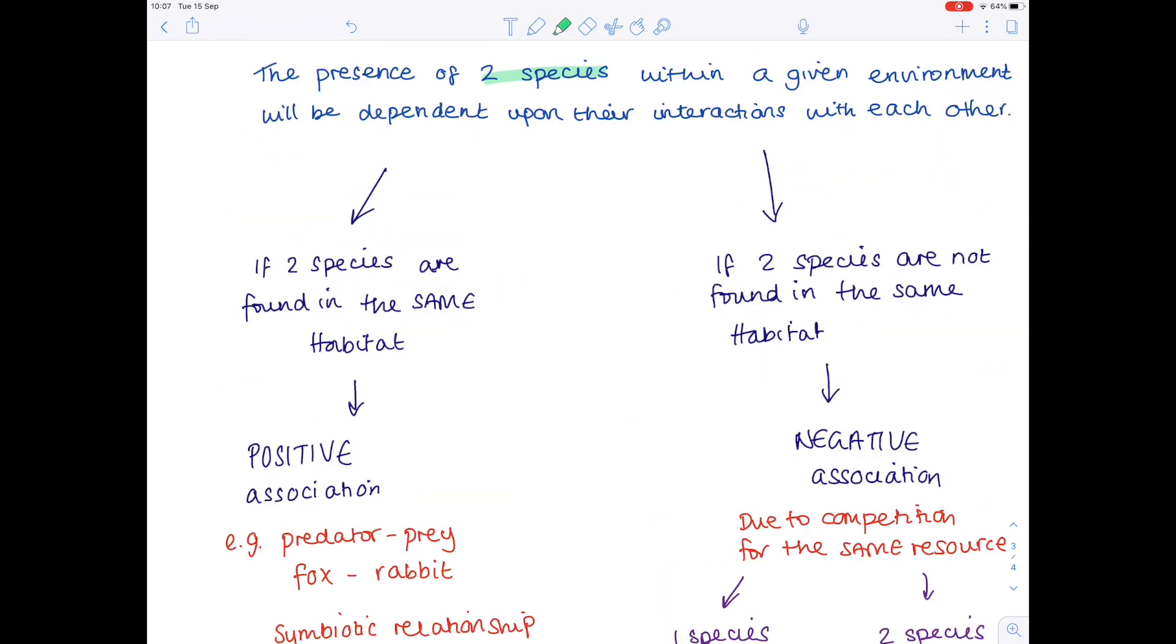Be very aware that everything I've just written is based on interactions between two species. If the species don't interact at all, there's no association with them, and therefore their distribution will be completely independent of one another. They'll just go about living their own lives, not affecting each other in any way. Sorry about the dog.